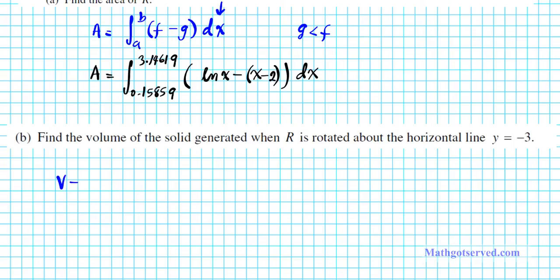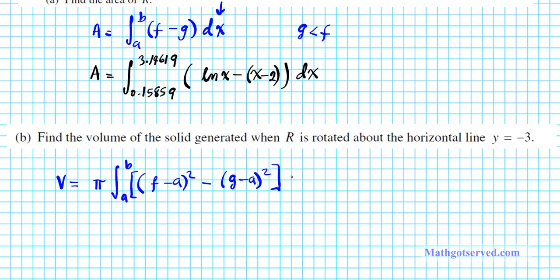We're going to use V equals pi times the integral from a to b of (f minus a) squared minus (g minus a) squared. Now is it going to be dx or dy? Notice that we are rotating in the direction of the x-axis, so it's going to be dx.